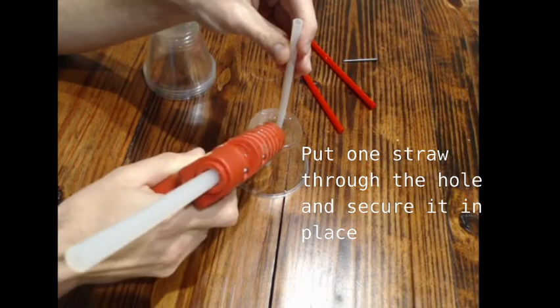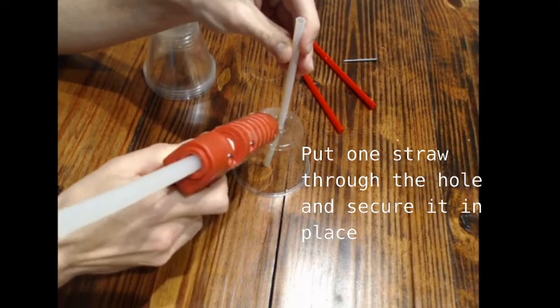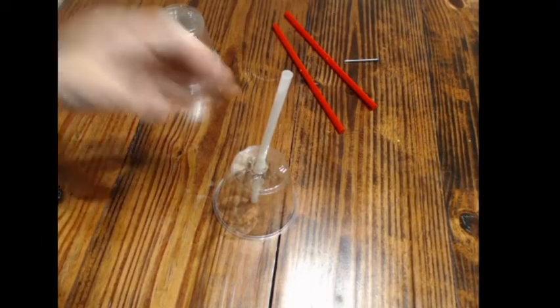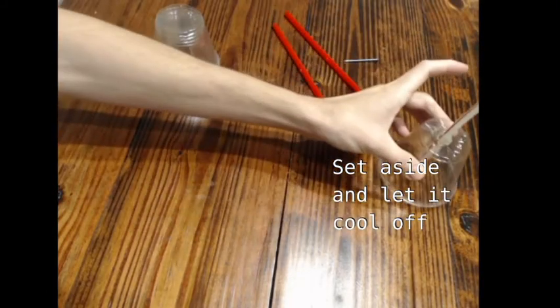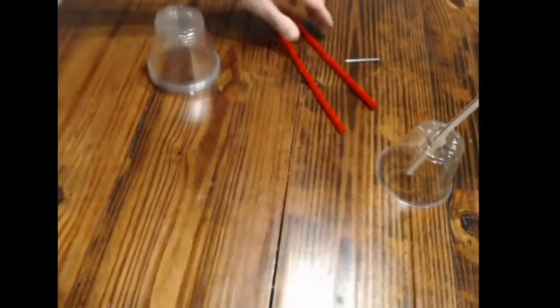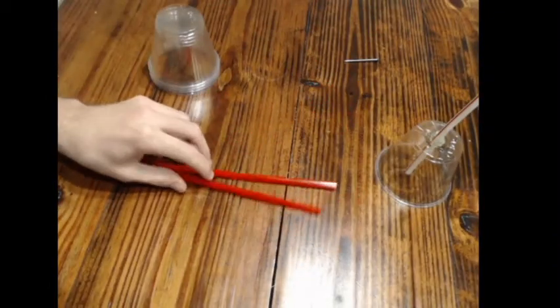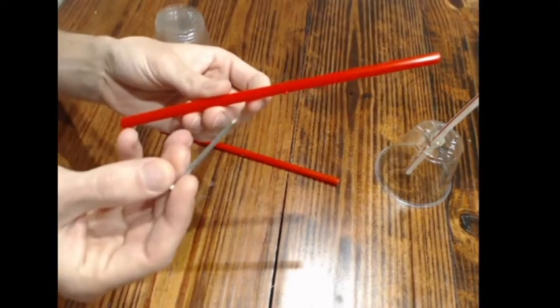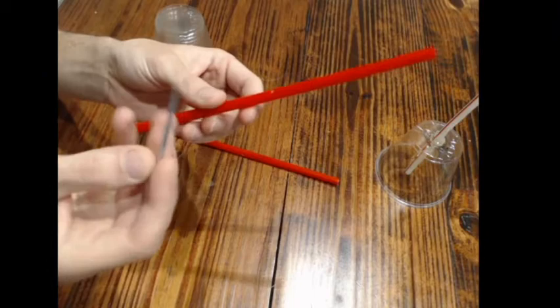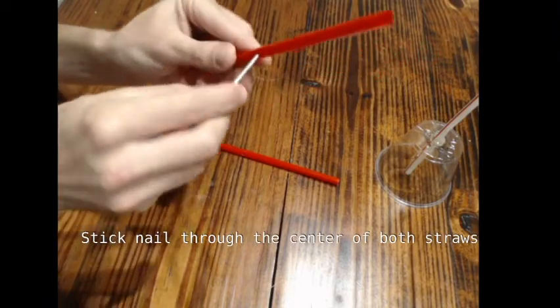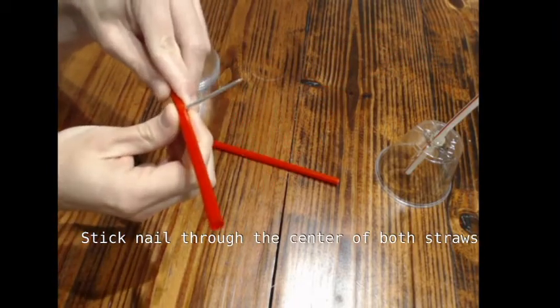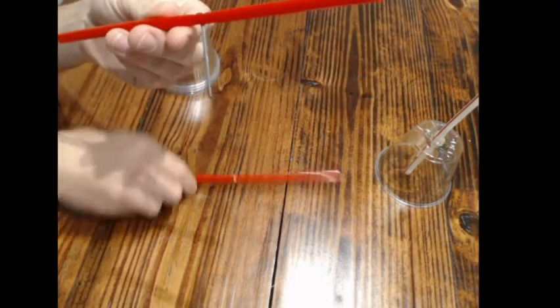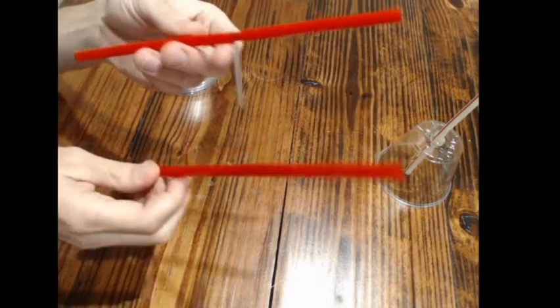Now at the bottom of the straw underneath the cup you could put some play-doh or something as well. I didn't and my straw ended up breaking so I had to fix it later on. Now in the center of the two straws, the two red straws, I'm going to take my nail and go straight through the straws. Okay, this way I can make an X shape.